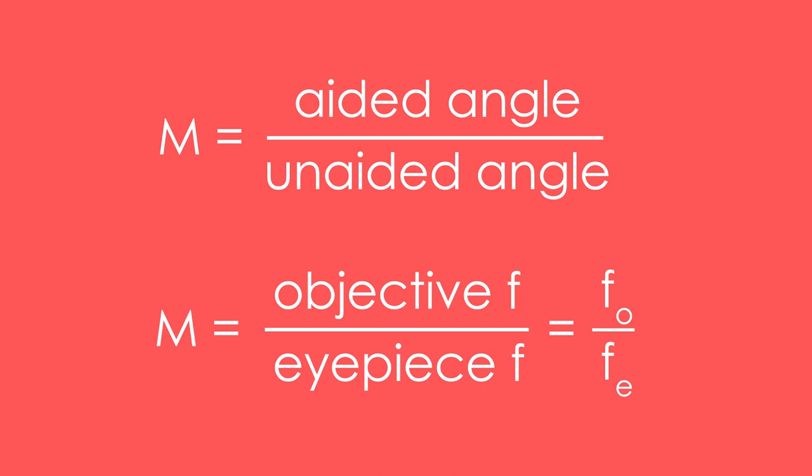And also if we're dealing with two lenses, we have an objective and an eyepiece lens. Magnification is equal to the focal length of the objective lens divided by the focal length of the eyepiece lens.